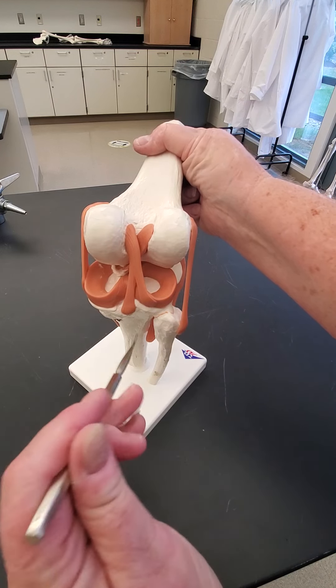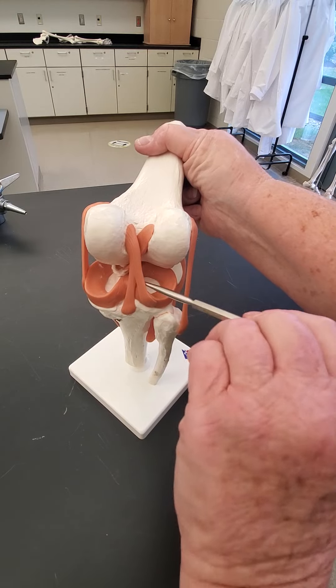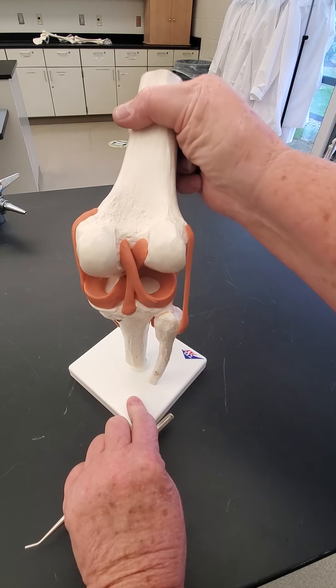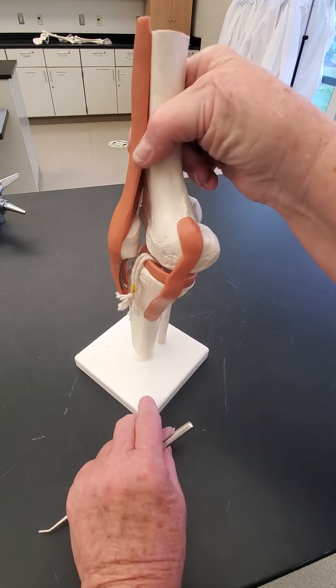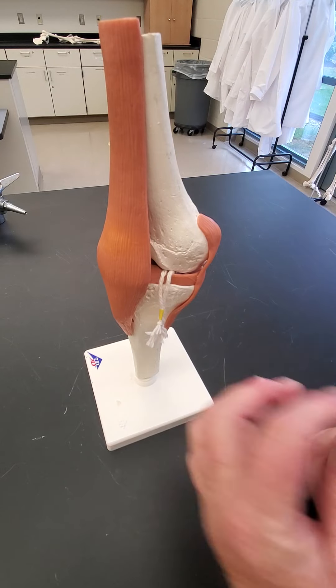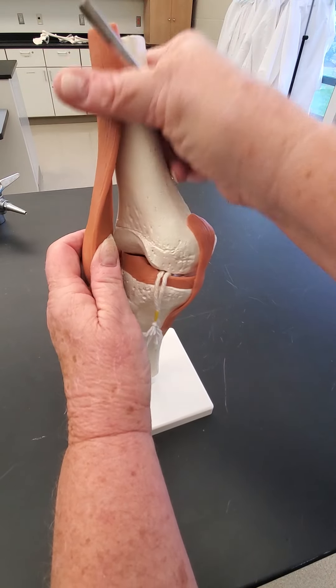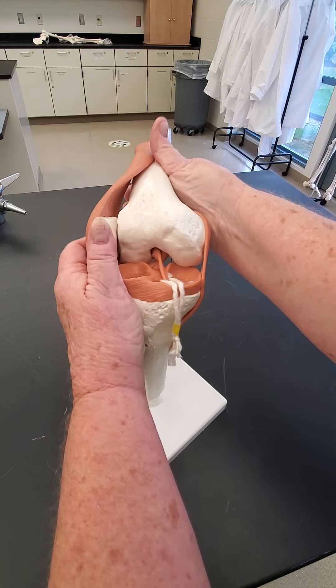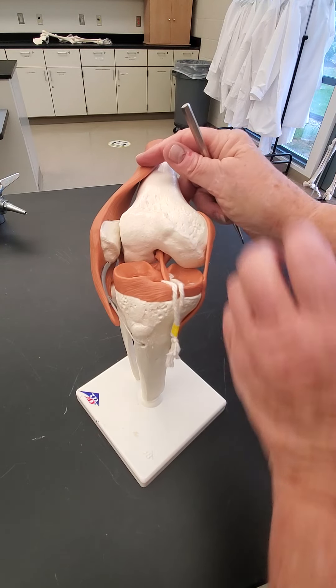And then you've got these two ligaments that cross over inside the capsule. I'm going to come around to the front view. Those are the cruciate ligaments, the ligaments that all the athletes are constantly tearing. So when we pull this back,